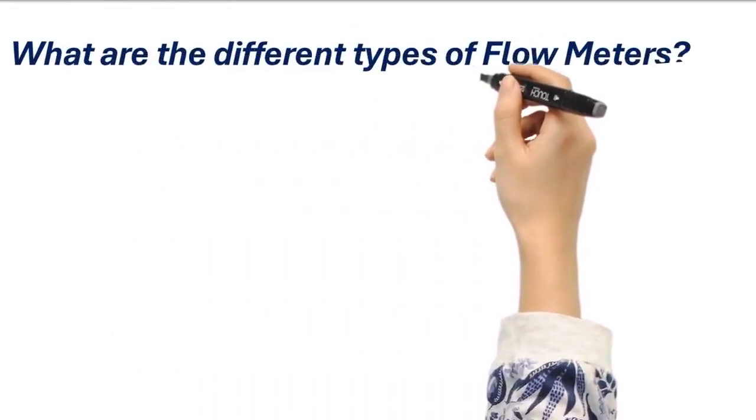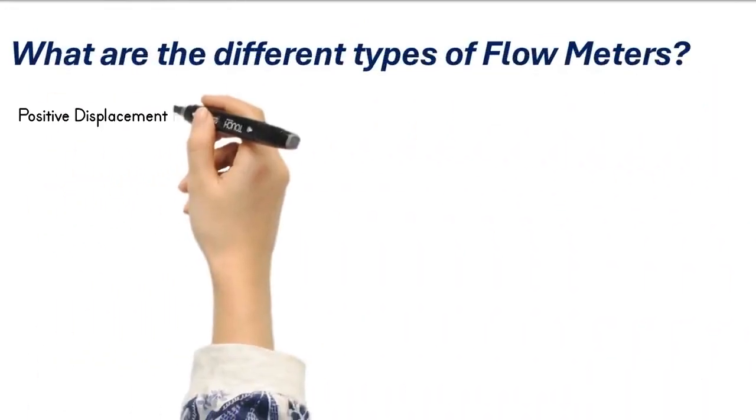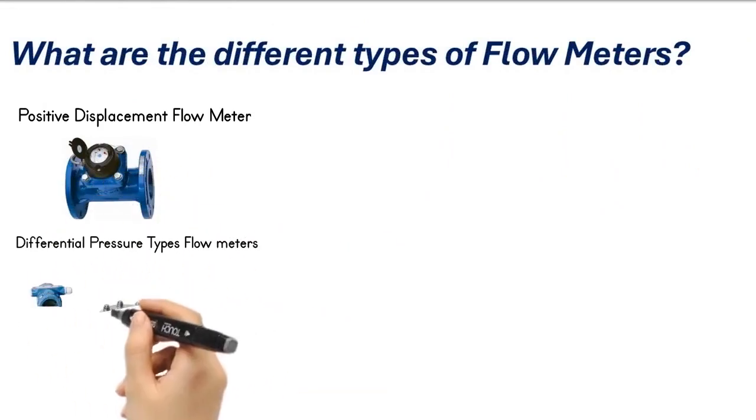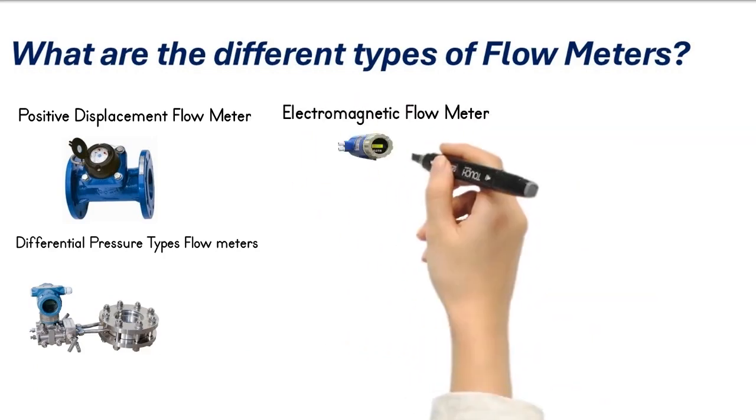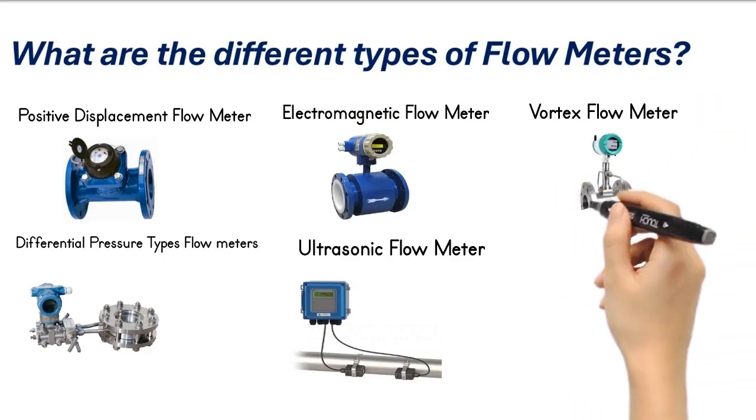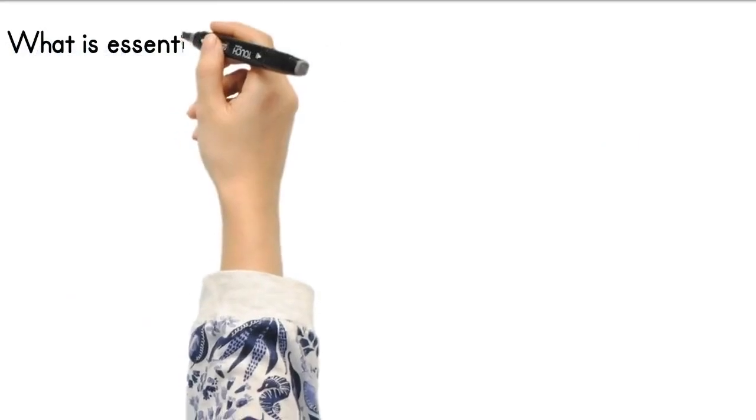What are the different types of flow meters? The different types of flow meters are: positive displacement flow meter, differential pressure type flow meters, electromagnetic flow meter, ultrasonic flow meter, vortex flow meter, and mass flow meter.